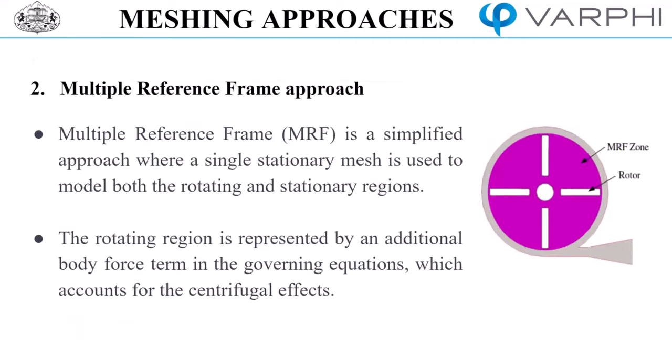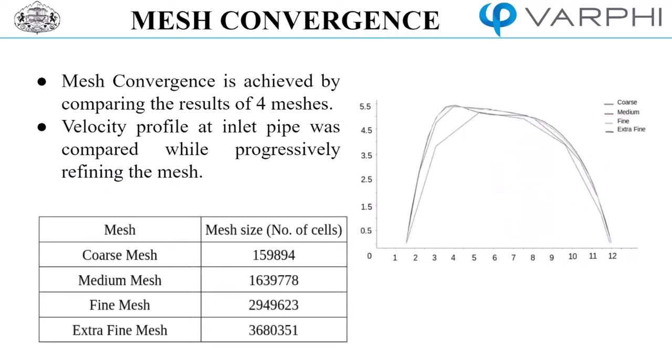In dynamic simulation, mesh approaches play a critical role in accurately capturing the motion of rotating components. There are two commonly used approaches, which is sliding mesh approach and multiple reference frame approach. We use sliding mesh approach first, which involves deforming the mesh to accommodate the motion of rotating components. It uses both stationary and rotating regions in the simulation. The key idea is to update the mesh interfaces as the simulation progresses, ensuring the accuracy of the simulation.